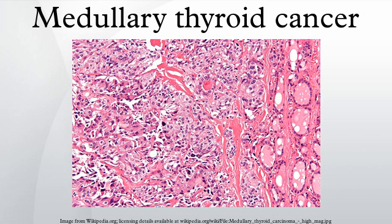Sites of spread of medullary thyroid carcinoma include local lymph nodes in the neck, lymph nodes in the central portion of the chest, liver, lung, and bone. Spread to other sites such as skin or brain occurs but is uncommon.